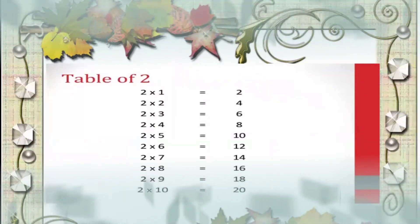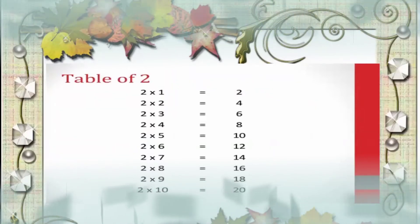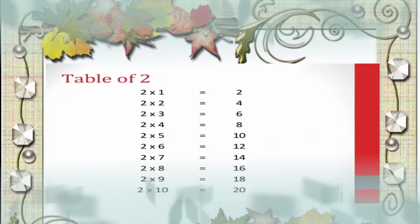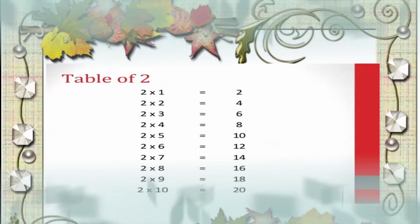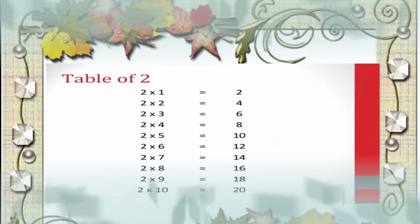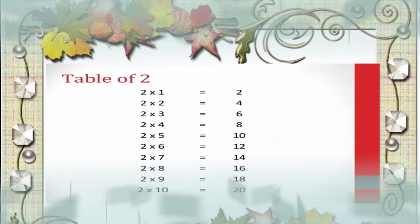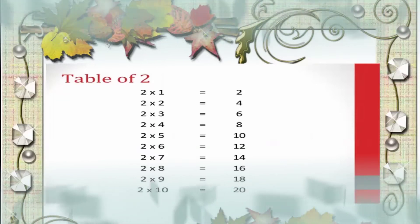Let us repeat. 2 1's are 2, 2 2's are 4, 2 3's are 6, 2 4's are 8, 2 5's are 10, 2 6's are 12, 2 7's are 14, 2 8's are 16, 2 9's are 18, 2 10's are 20.